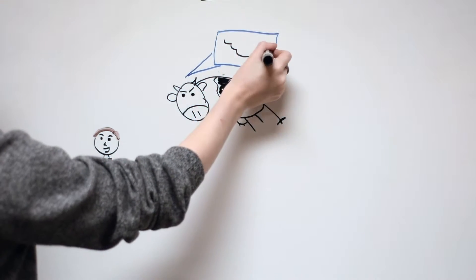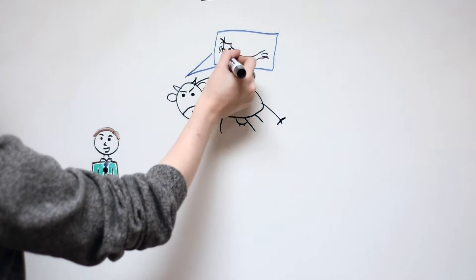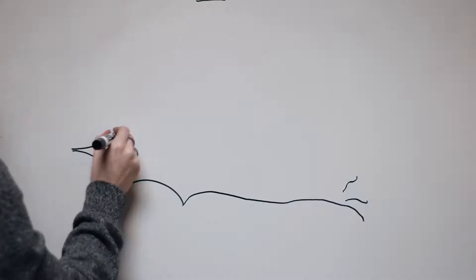This disorder affects the brain and spinal cord of the cow, which are made up of cells called neurons. Let's take a look at the neuron.